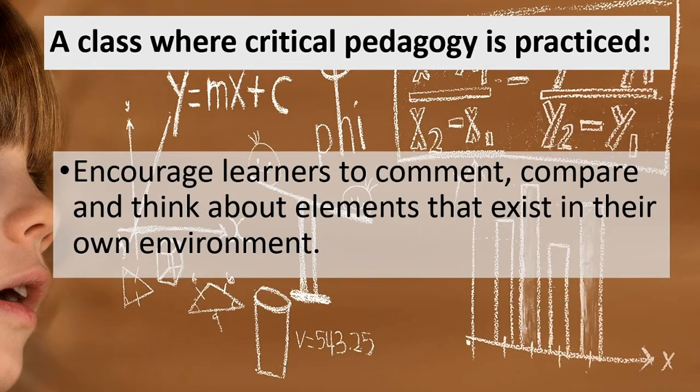In such classes, learners should be encouraged to comment, compare, and think about various elements existing in their own environment. In most science classrooms, what is taught is not connected to students' immediate surroundings. If you want to develop critical skills, you should provide opportunities for learners to identify elements from their environment, and compare and relate them to the theories and practices being taught in the science classroom — only then can you develop your learner as a critical thinker.